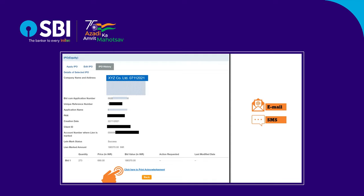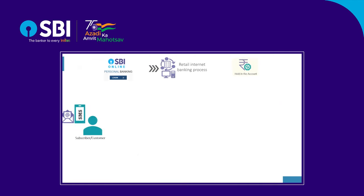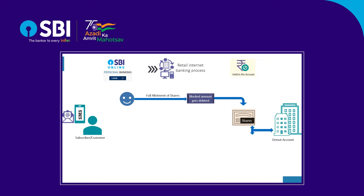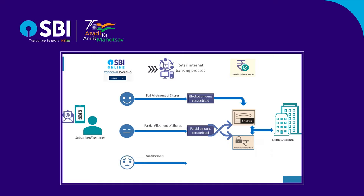Bidders will also be intimated through email for successful bidding status or for allotment or non-allotment of shares. In case of allotment of shares, your DP account would get credited to the extent of allotted equity shares. The bank account gets debited after finalization of the basis of allotment. In case of full allotment, the blocked amount will get debited from your bank account. In case of partial allotment, money will be debited for the allotment value and the balance amount will be unblocked in the investor's account. For unsuccessful applicants, the lien on the deposit account is removed within approximately three days after finalization of the basis of allotment.